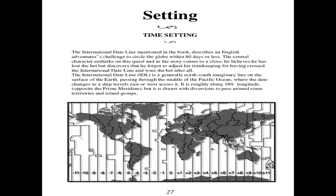In this story, we need to understand one thing which will help us understand the story in a better way later. It's the International Date Line, IDL. It is generally a north-south imaginary line on the surface of the Earth passing through the middle of the Pacific Ocean, where the date changes when a ship travels from east to west across it. It is around 180° longitude. According to it, while traveling, the time zone changes.